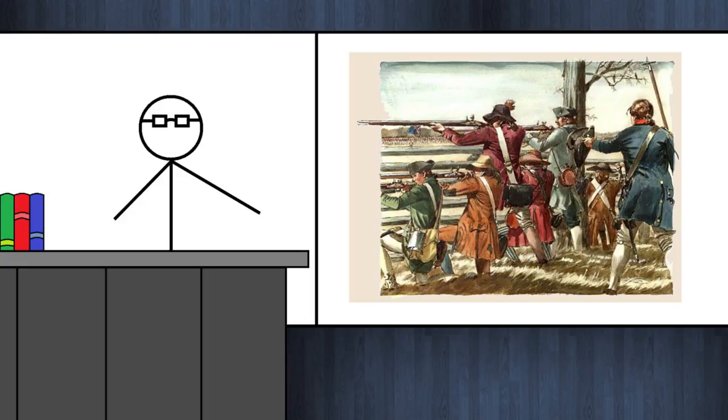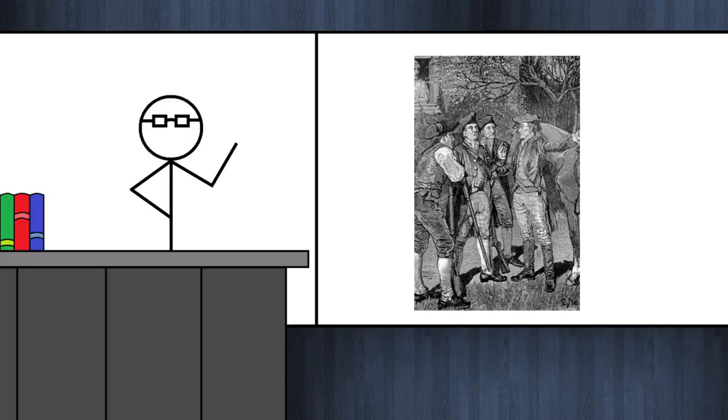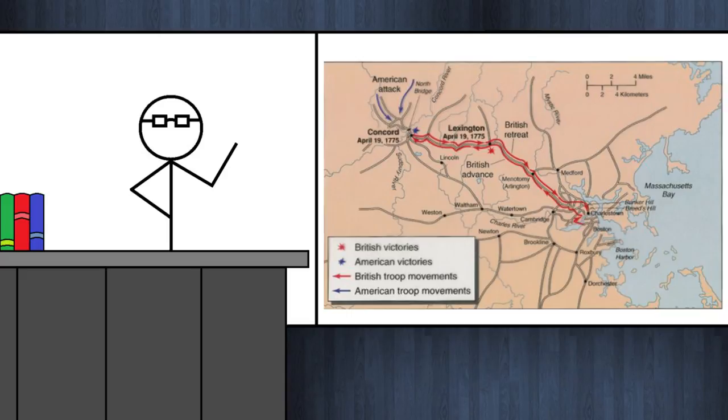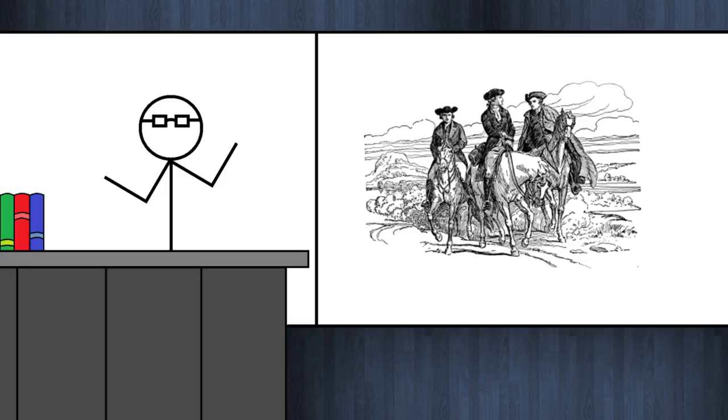On April 18, 1775, Warren learned through Boston's revolutionary underground that the British troops were preparing to cross the Charles River and march on Lexington, presumably to arrest John Hancock and Samuel Adams, and then to march on Concord to seize munitions.